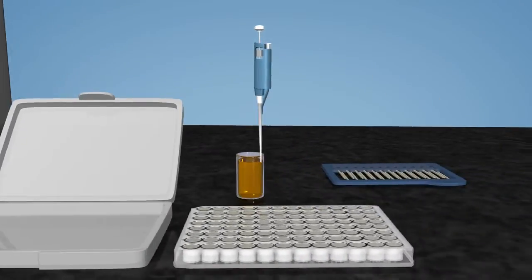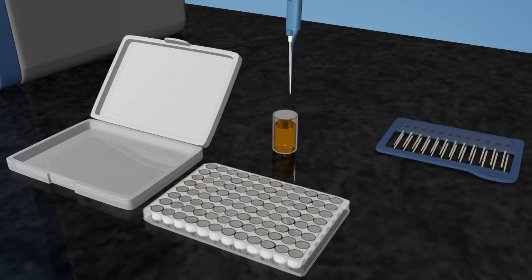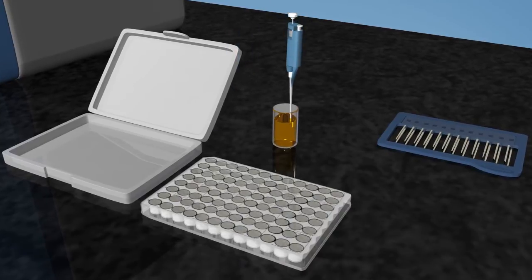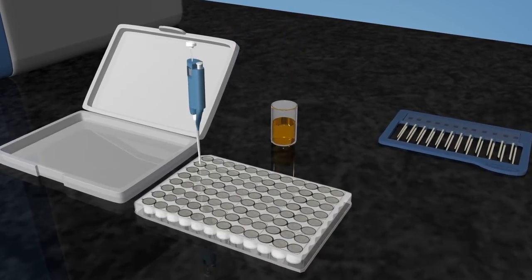To run an assay, the user simply adds their sample to a pre-filled reagent plate and loads that plate along with the auto array into the Maverick instrument.